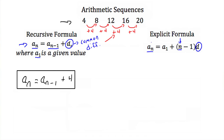If I was looking for the third term, a_3, that would be equal to the first term plus n, where n is 3, minus 1, so 2 times our common difference. If I wanted to write this arithmetic sequence as an explicit formula, it would look like a_n is equal to a_1, which in this case is 4, plus n minus 1 times d, which is our common difference of 4. This is the explicit formula for this arithmetic sequence.